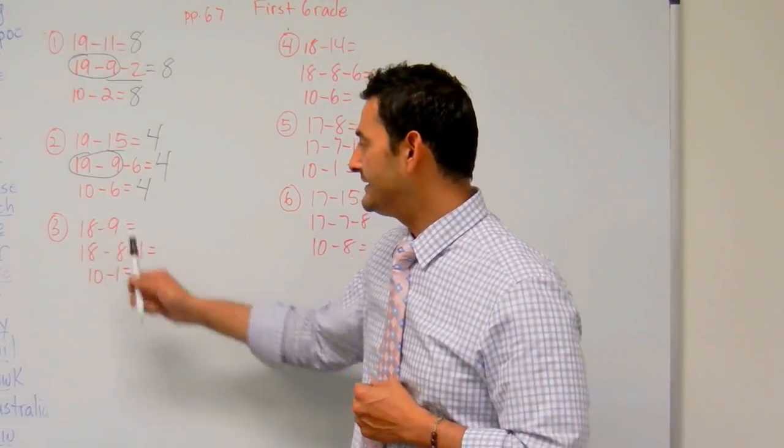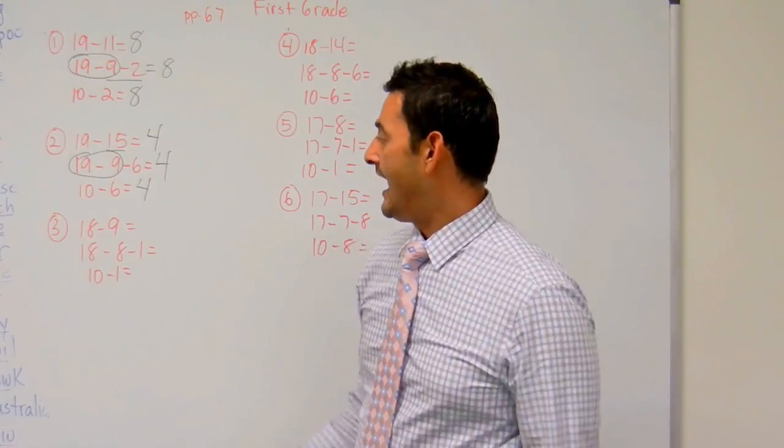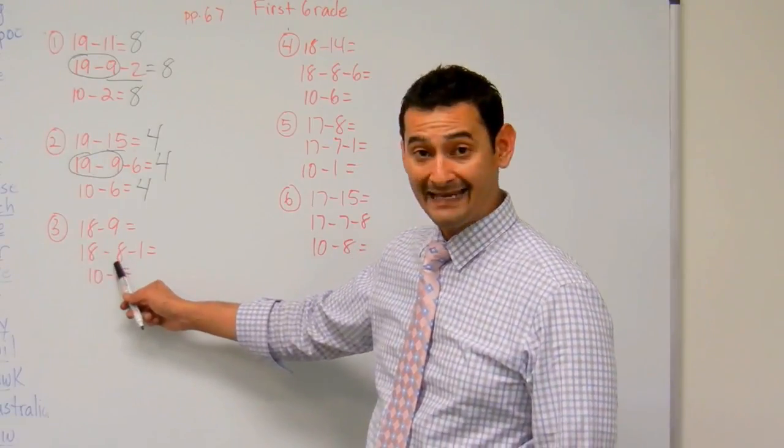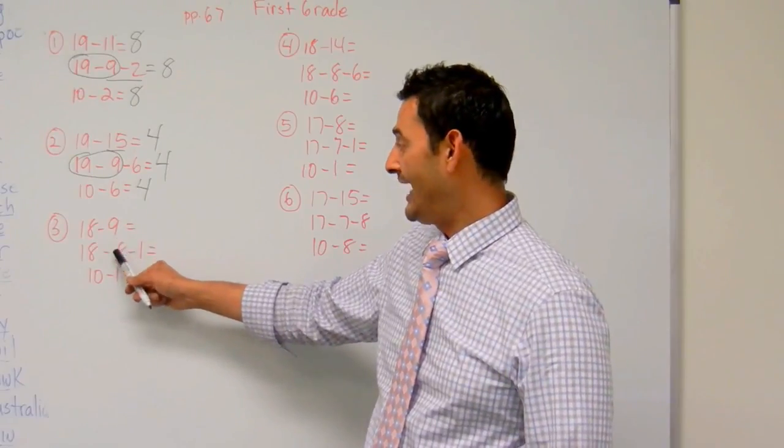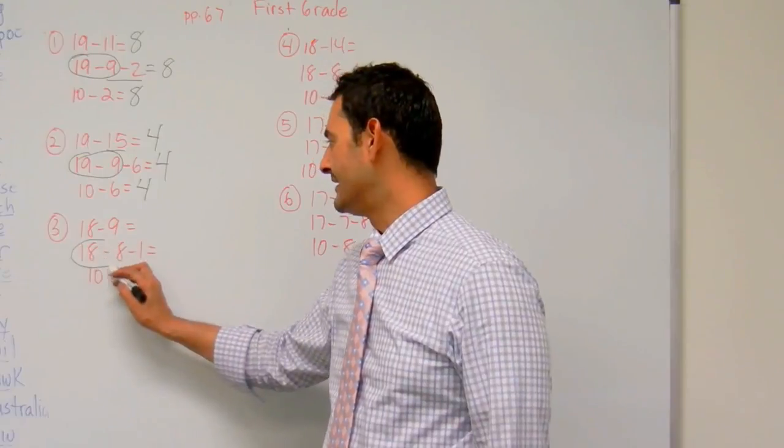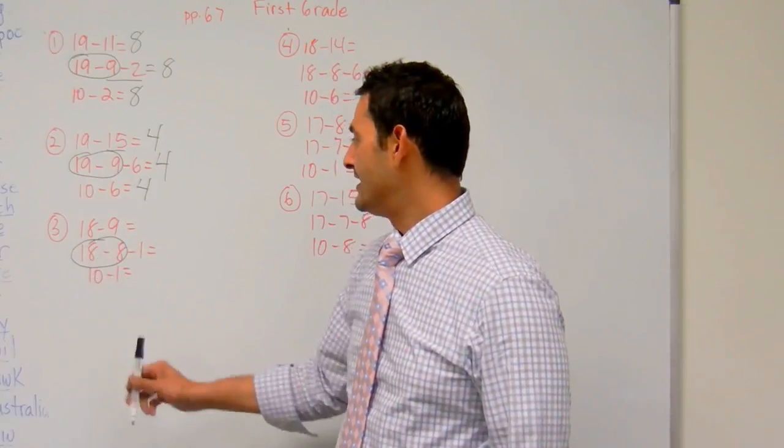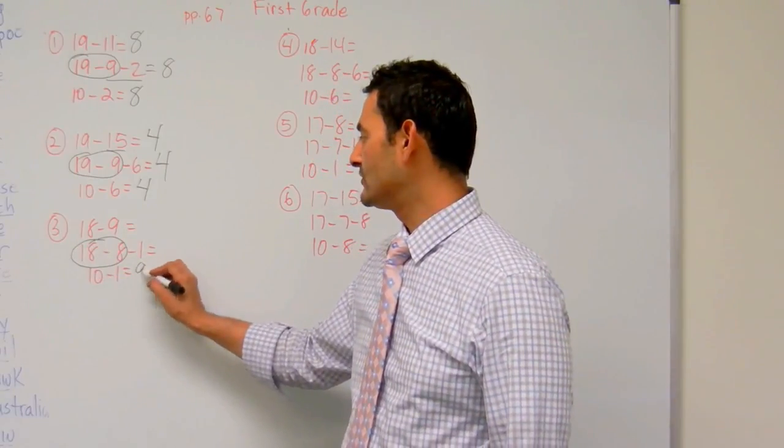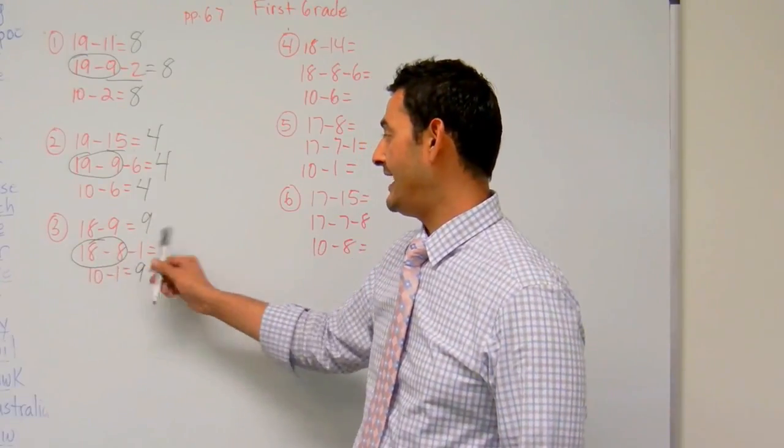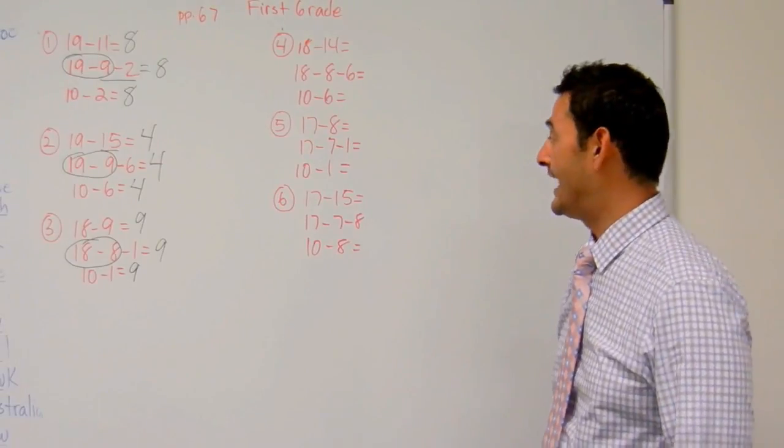Here we have 18 minus 9. I want to be able to make this a 10. So 18 minus 8 is 10, I know that. So the 8 and the 1 is going to be a 9. So I'm going to decompose that. That's going to be a 10 there. And now 10 minus 1 equals 9. 18 minus 9 equals 9. And 18 minus 8 minus 1 also equals 9.